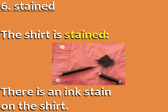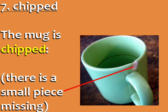Number 6: Stained. The shirt is stained. Another way to say it is there is an ink stain on the shirt. Number 7: Chipped. The mug is chipped. This means there is a small piece missing.